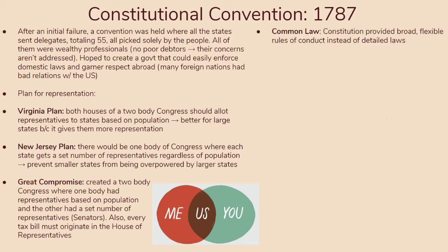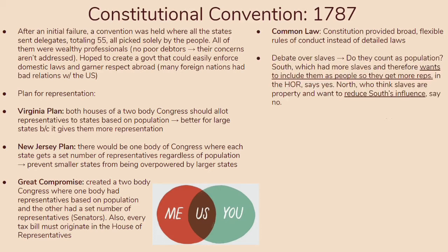Keep in mind that the Constitution was written with the idea of common law in mind. It provided broad, flexible rules of conduct instead of detailed laws for every single scenario — that wasn't what the Constitution was meant for. You can see this idea of common law favors loose constructionists of the Constitution, which we'll talk about in later chapters. There are also debates over slavery — do slaves count as part of the population? The South, which had more slaves and wanted to include them, said yes. The North, who considered slaves as property and wanted to reduce the South's influence, said no. This eventually led to the three-fifths compromise, where slaves count as three-fifths of a person, which is obviously just horrible.